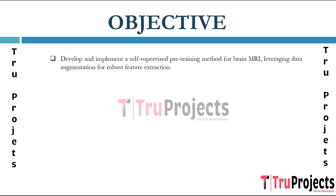Objective of the project. The primary objective is to propose and implement a self-supervised pre-training method for brain MRI images. The project aims to improve feature learning by applying data augmentation techniques to the MRI dataset. The deep learning model is exposed to a diverse range of augmented data, facilitating robust feature extraction. This step contributes to the development of a more effective representation of important features in brain MRI images.